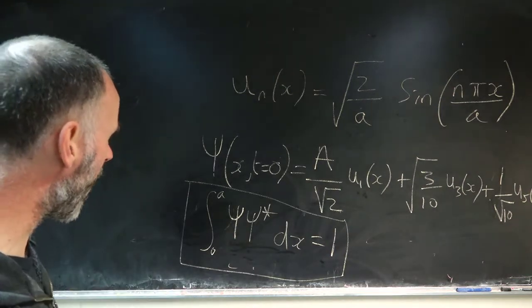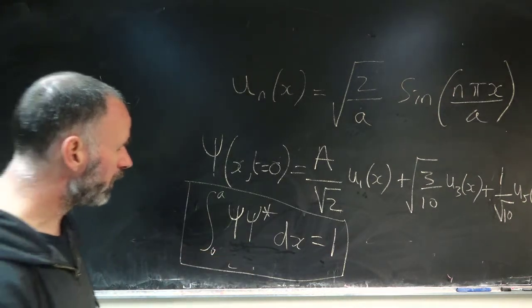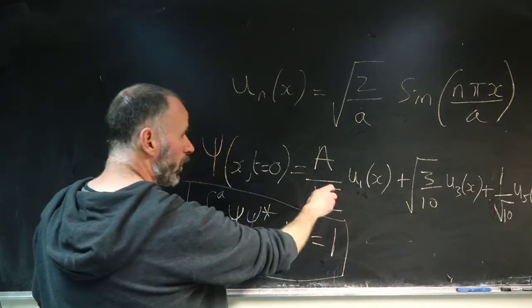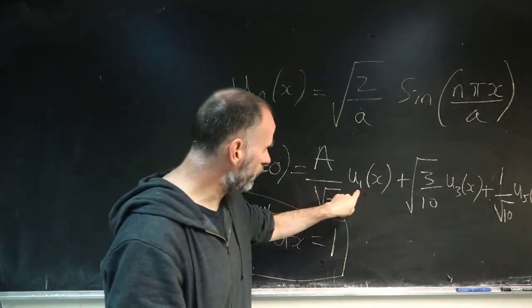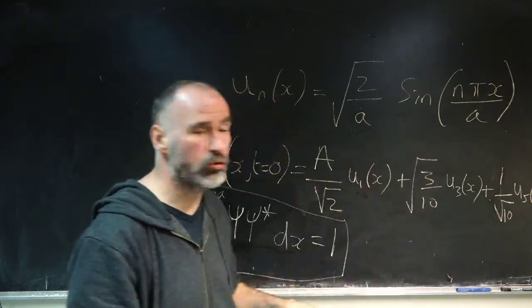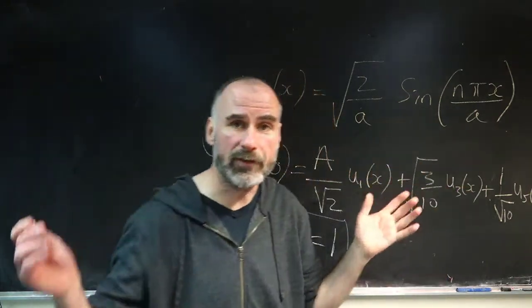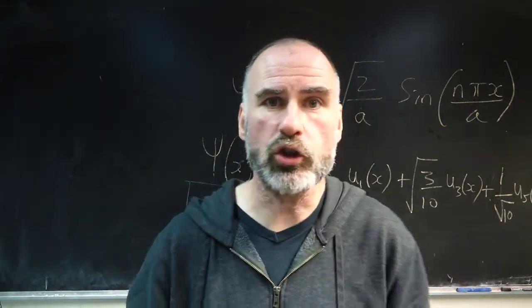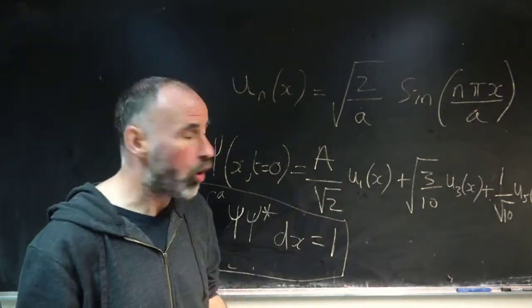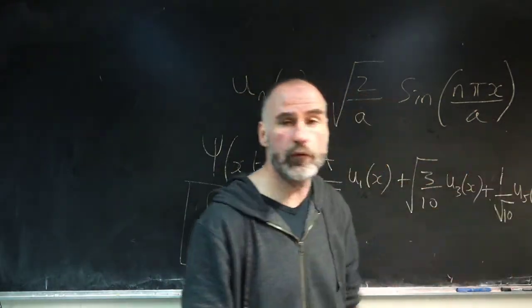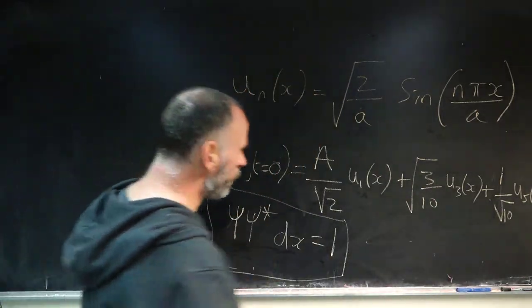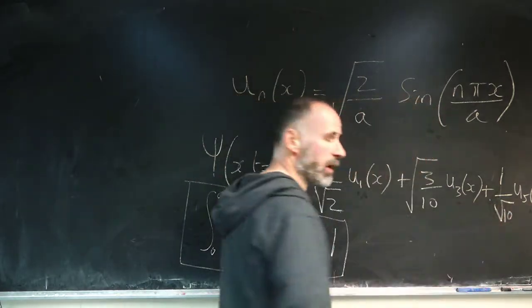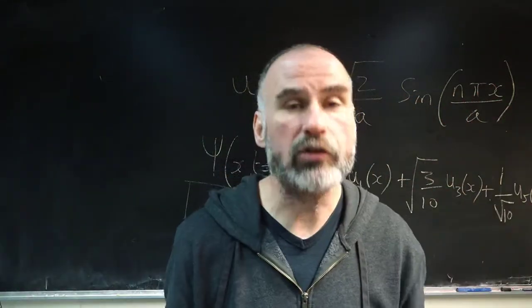What we're going to have is zero for any cross terms. So anything which is u1 by u3, or u1 by u5, or u3 by u5 — those go to zero because the basis functions are orthonormal. So unless we have u1 by u1, or u3 by u3, or u5 by u5, those integrals are going to be zero. And if we have u1 by u1, or u3 by u3, or u5 by u5, the integrals are going to be one.